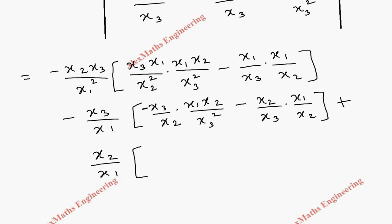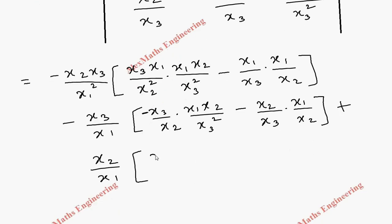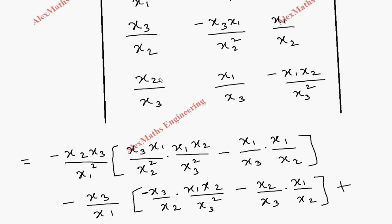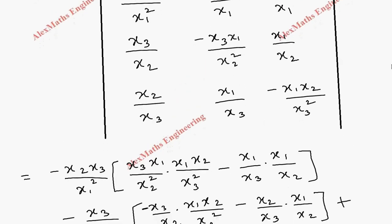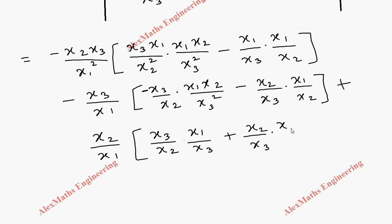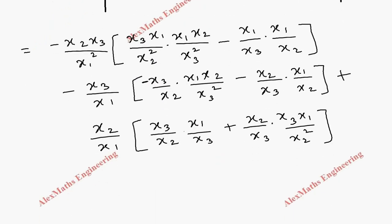For the third element, we take +x2/x1 and open the bracket. We multiply: (x3/x2)*(x1/x3) then minus — and since there is already a minus it becomes plus — (x2/x3)*(x3*x1/x2²). This completes the expansion and now we need to simplify.